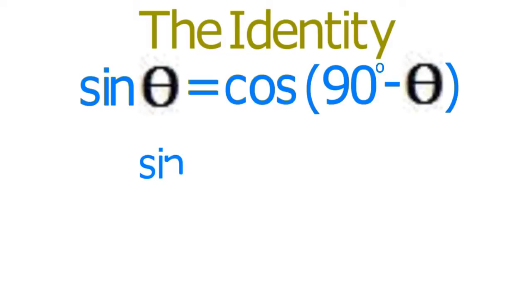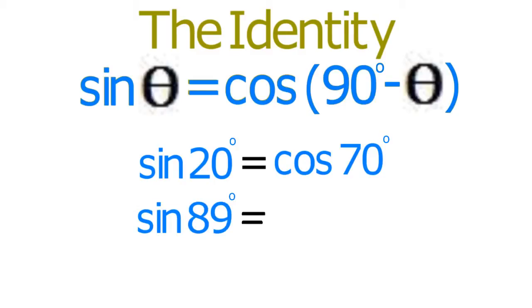For example, the sine of 20 degrees equals the cosine of 70 degrees. Similarly, the sine of 89 degrees equals the cosine of 1 degree.